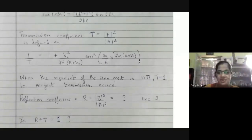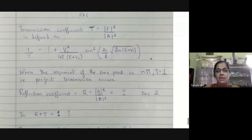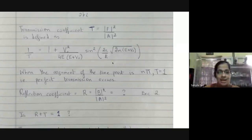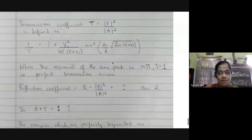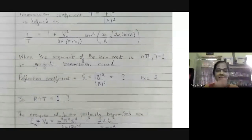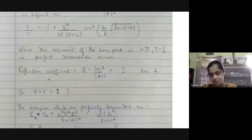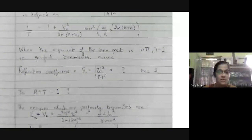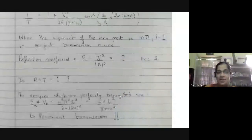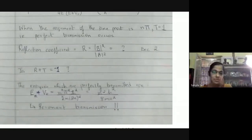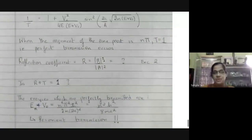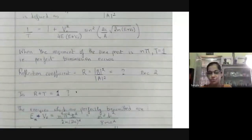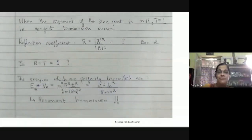If you take 1/T, when the argument of the sine squared term equals nπ, that term becomes zero and you have perfect transmission: T = 1. Analogously, the reflection coefficient R is defined as |B|²/|A|². You can verify that R + T = 1, as they represent the fractions of the incident wave reflected and transmitted and must sum to one.